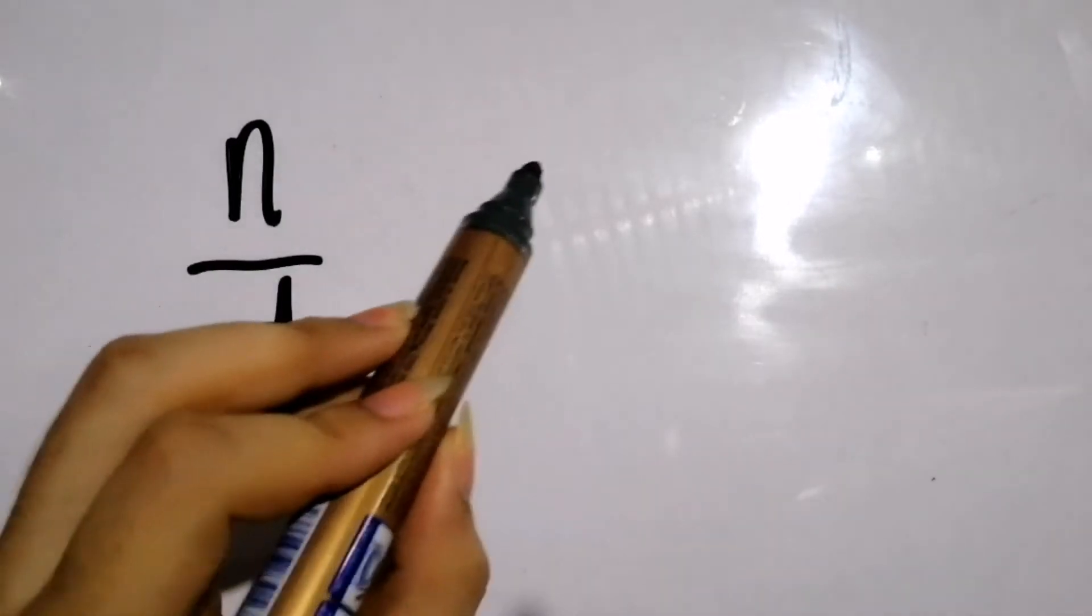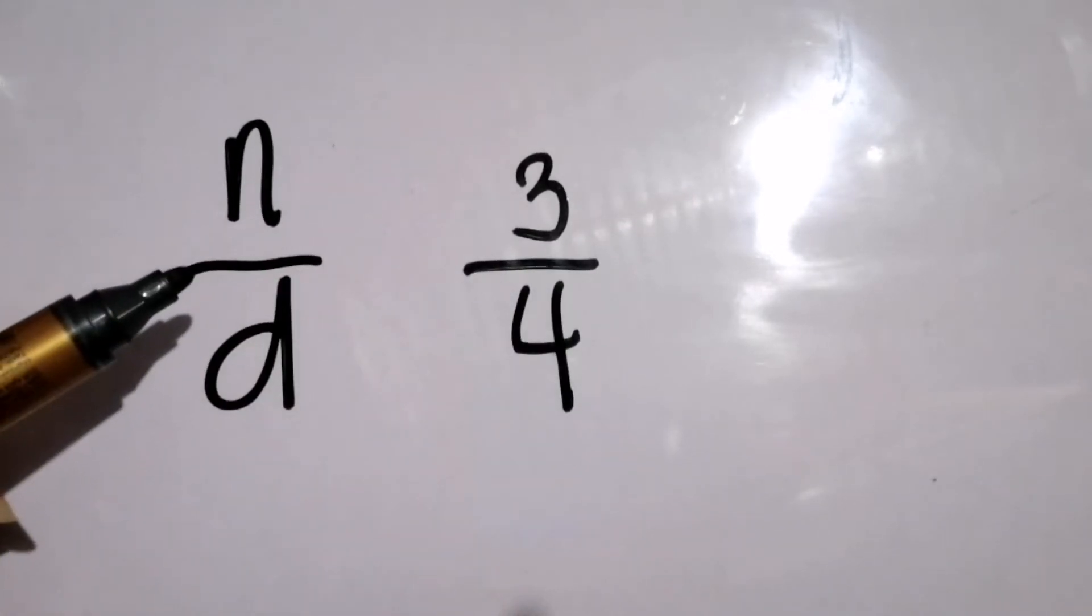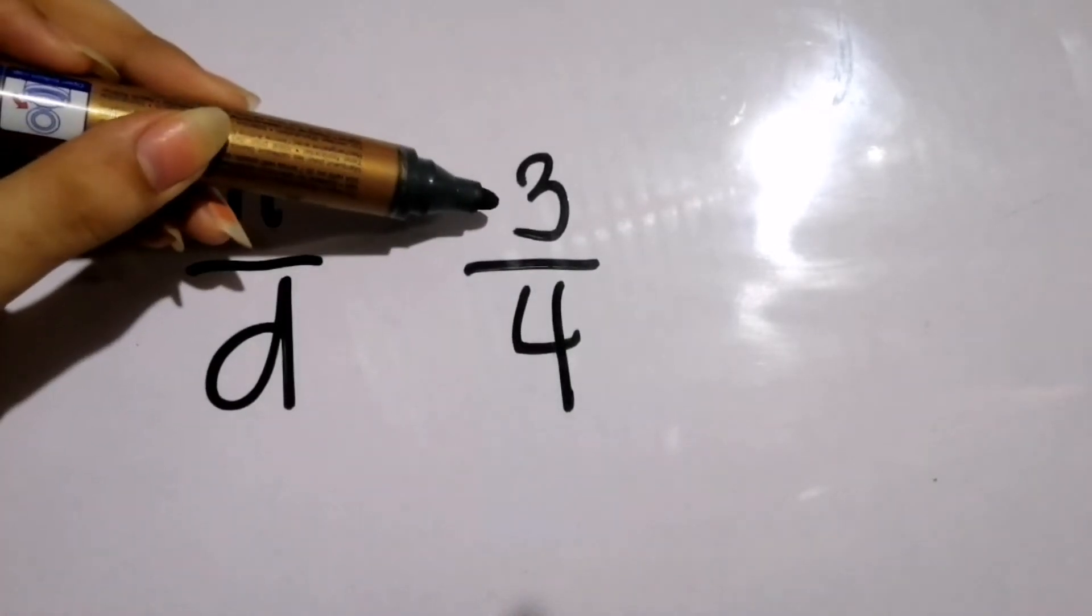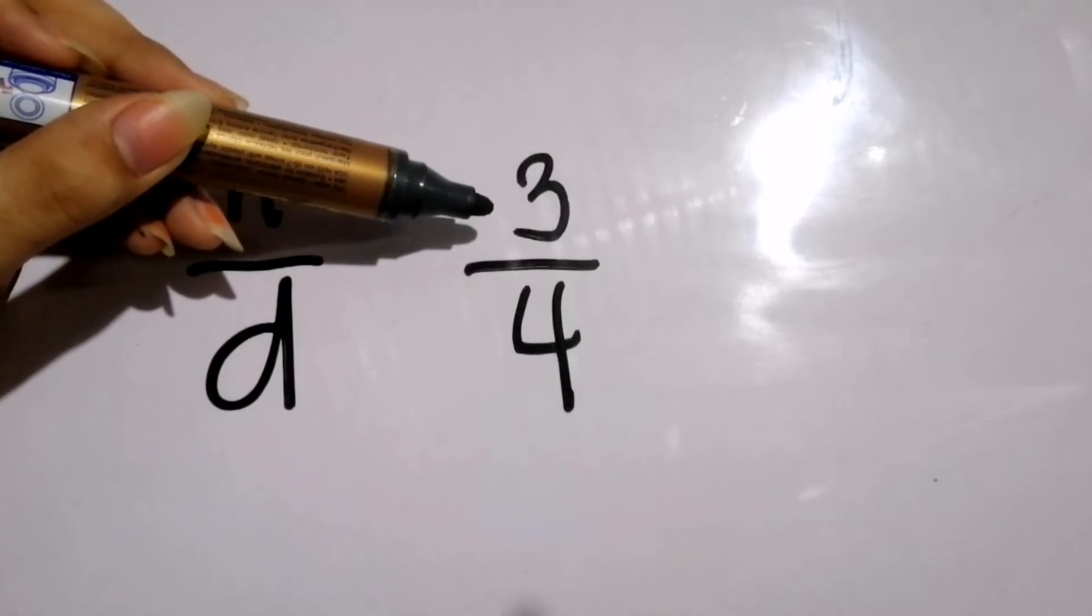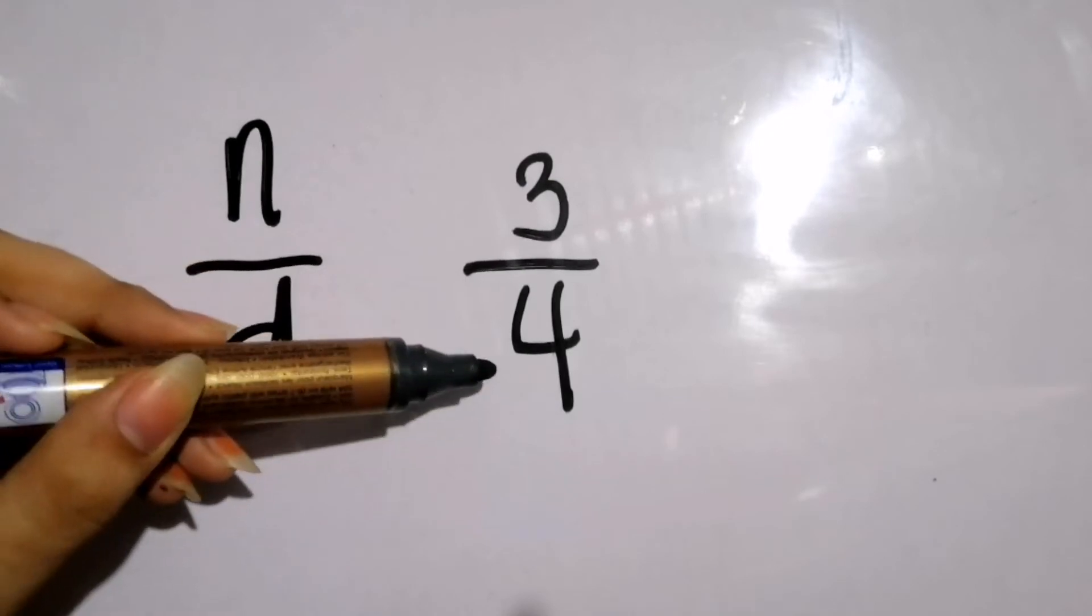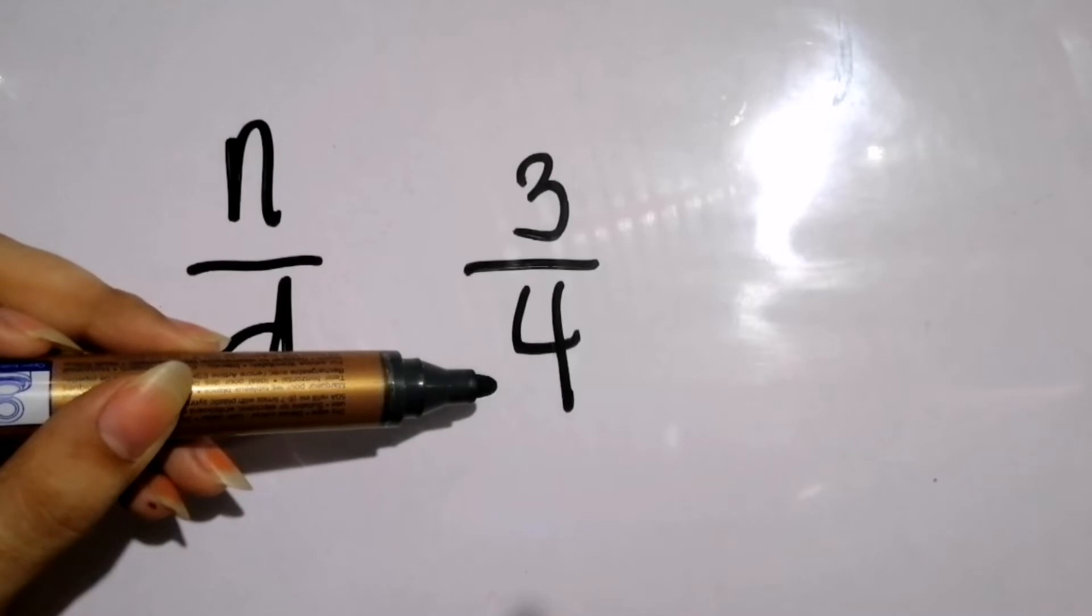In our previous example we had three-fourths, or three over four, wherein three was the number of parts that we considered, the slices that were left, and four is the total number of slices that the pizza was cut into.